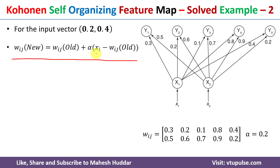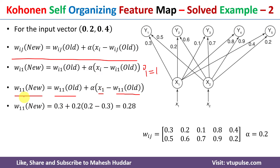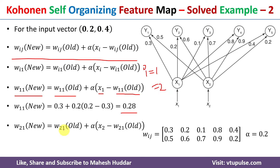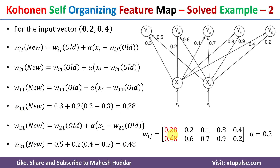To update these weights we use the equation: w_ij(new) = w_ij(old) + alpha * (x_i minus w_ij(old)), where j = 1 since the input vector is assigned to y1. For i=1: w_11(new) = w_11(old) + alpha * (x_1 minus w_11(old)), giving w_11(new) = 0.28. For i=2: w_21(new) = w_21(old) + alpha * (x_2 minus w_21(old)), giving w_21(new) = 0.48. These old weights are replaced with the new weights 0.28 and 0.48.